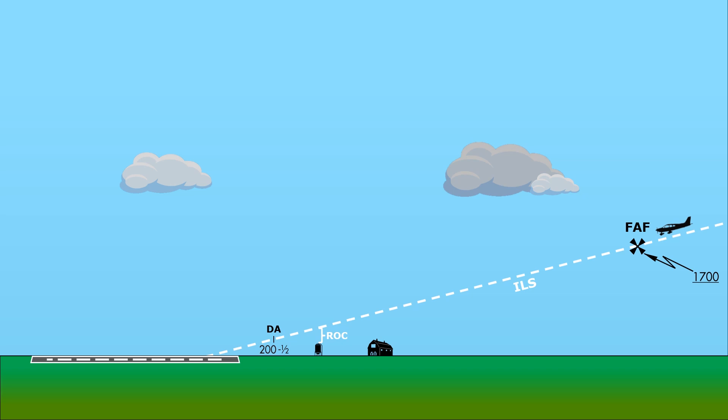Here, the glide slope gives us just enough height to meet the required obstacle clearance above this silo. That decision altitude at 200 feet is well beyond the silo. We'd never see it if we were in the clouds down to minimums, and that's fine because we meet the ROC requirements.